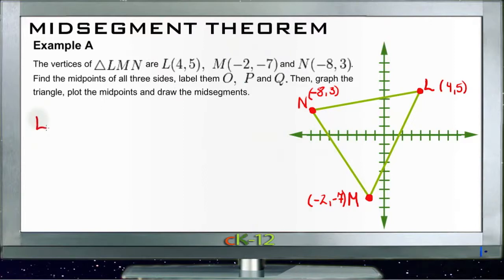So if we start with line segment LN, it runs from -8 on one x coordinate to 4 on the other x coordinate. So we need to find the midpoint. We take our -8, add it to our 4, and divide by 2 to find our midpoint for the x. And then we'll find our midpoint for the y, which goes from 3 to 5. So we'll add 3 to 5 and divide by 2.